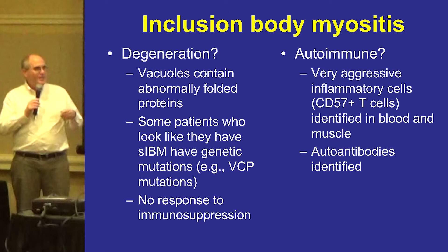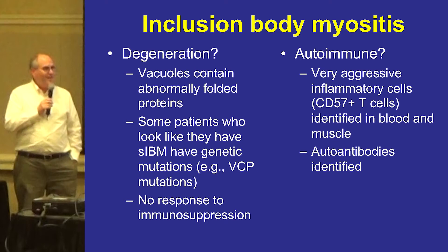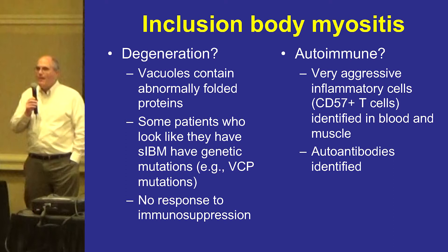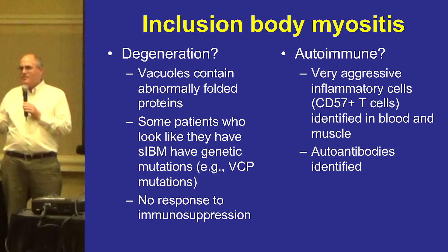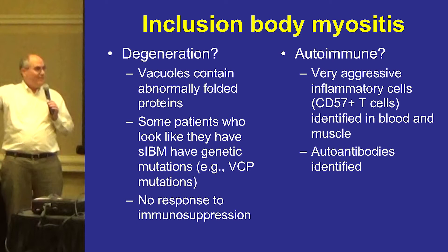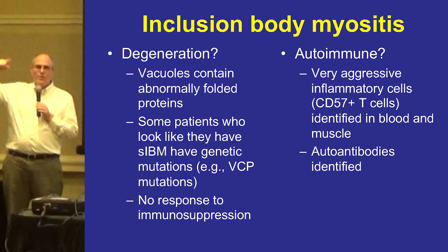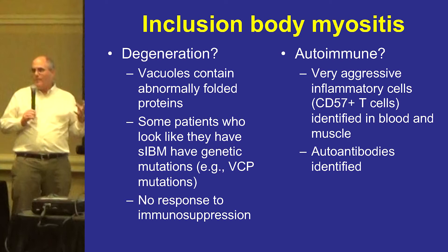A question was raised about the NT5C1A autoantibody: could it show up before someone develops symptoms? The answer is yes. Steve Greenberg had one patient who came to his clinic with high CK levels but no weakness. He banked their blood. Years later, after discovering NT5C1A, he went back and screened all his banked blood samples. That patient — who showed up years before developing any symptoms other than elevated blood enzymes — already had NT5C1A autoantibodies. So the antibodies may show up before you develop the disease.